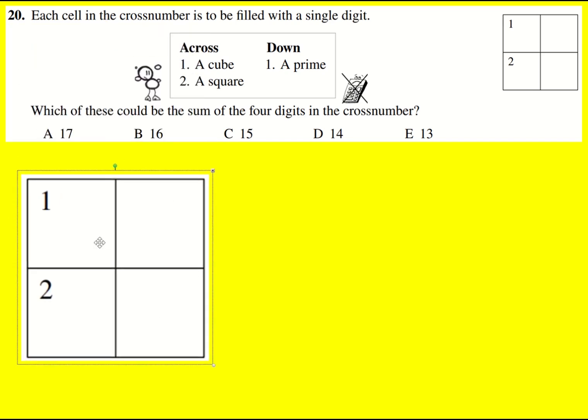We're asked to fill this cross number with single digits in each box and then what is the possible sum of the four digits?